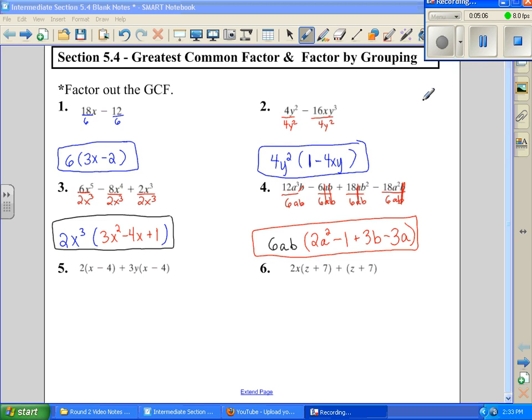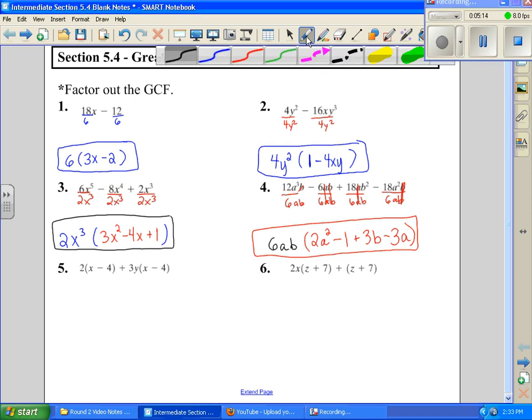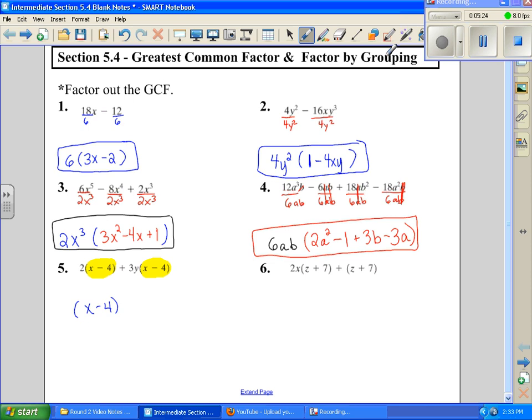Number 5 is more like a visual. When I have this term, and then I have this term, well, it's obvious to see what they both have in common. It's obvious to see that they both have an (x - 4) in parentheses in common. And so if that's going to be my first factor, then what's left over on the outside becomes the other one. So I have a 2, and then that's plus 3y.